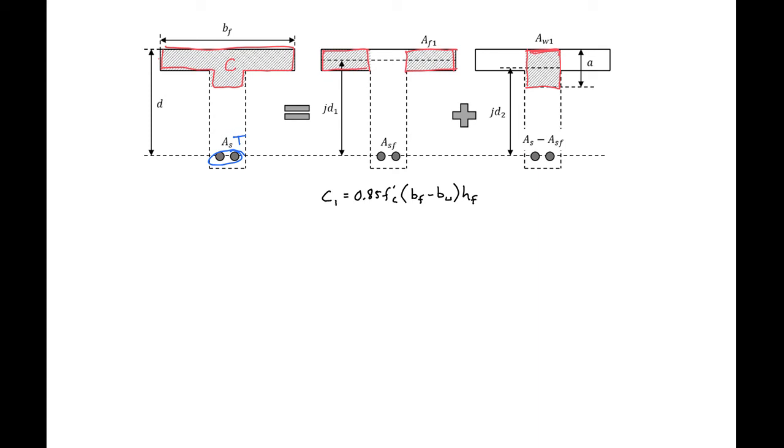So then we can find also our tension force, which is just going to be equal to our a sub sf times our fy. And what we can do in this first one is set our c1 equal to t1 and use this to solve for a sub sf, the area of steel required to balance out and satisfy equilibrium.